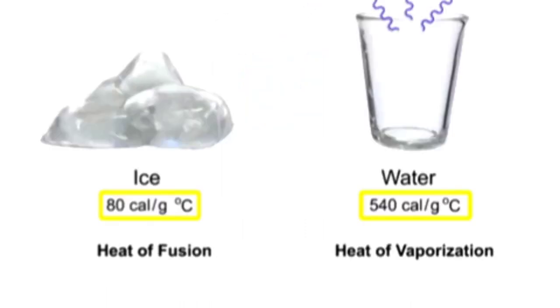With these values, it's easy to calculate exactly how many calories of heat energy are required to transform one gram of ice at absolute zero to steam. To warm one gram of ice from minus 273 degrees Celsius to zero degrees Celsius would be 273 times 0.5 calories per gram or about 140 calories.